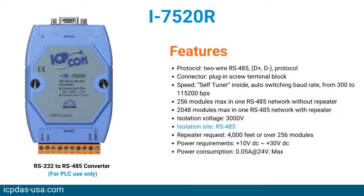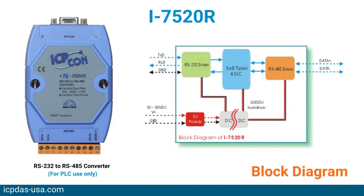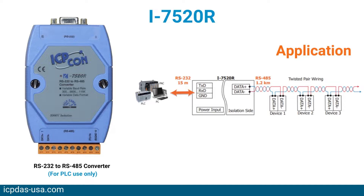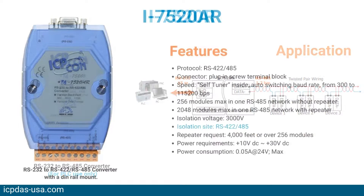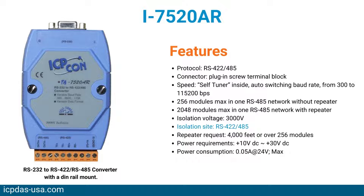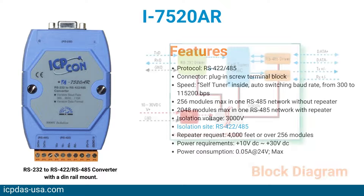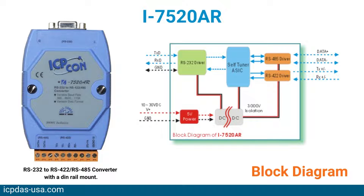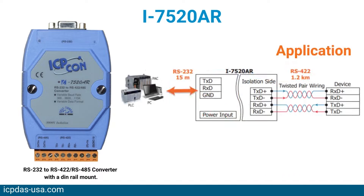The design of the isolation between the I-7520 and the I-7520R and AR is different. If the user wants to supply power from the PLC or PC, the I-7520R or RA should be used, otherwise isolation will be broken. You can click the link in the description to refer to the I-7000 bus converter manual for detailed information.